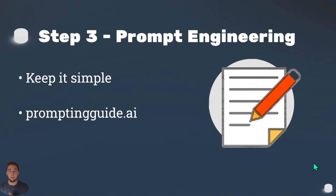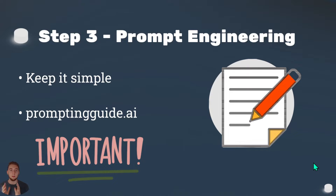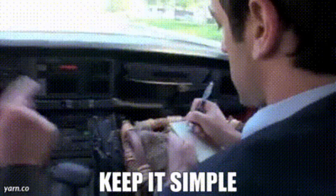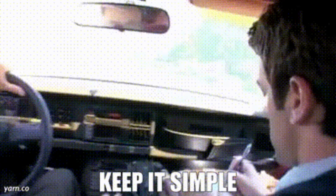Step three is prompt engineering. At a basic level, you need to understand how to talk to the AI, whether it's GPT, Claude, or any other large language model — the prompt engineering concepts apply to all of them. I want to be very clear though: it is not worth spending a ton of time on prompt engineering. There are a lot of YouTube gurus that tell you prompt engineering is the most important thing, but that is really not the case. Keep it simple — just a few hours is enough.